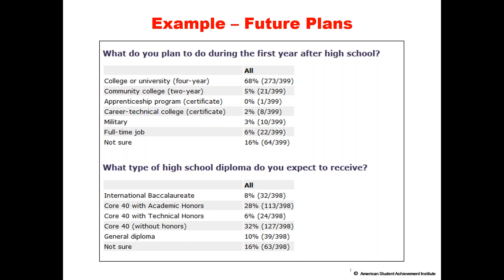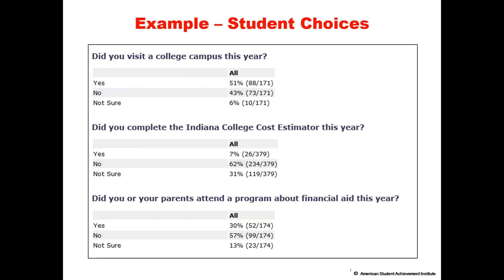Here are examples of future plan questions: What do you plan to do during the first year of high school? What type of high school diploma do you expect to receive? For Indiana students, Indiana-specific responses are included; schools outside Indiana will not see those questions. Student choice questions ask: Did you visit a college campus? Did you complete the Indiana college cost estimator? Did your parents attend the financial aid program? All questions are age-group appropriate — for instance, the college cost estimator question appears on the 12th grade survey but not the 3rd grade survey.